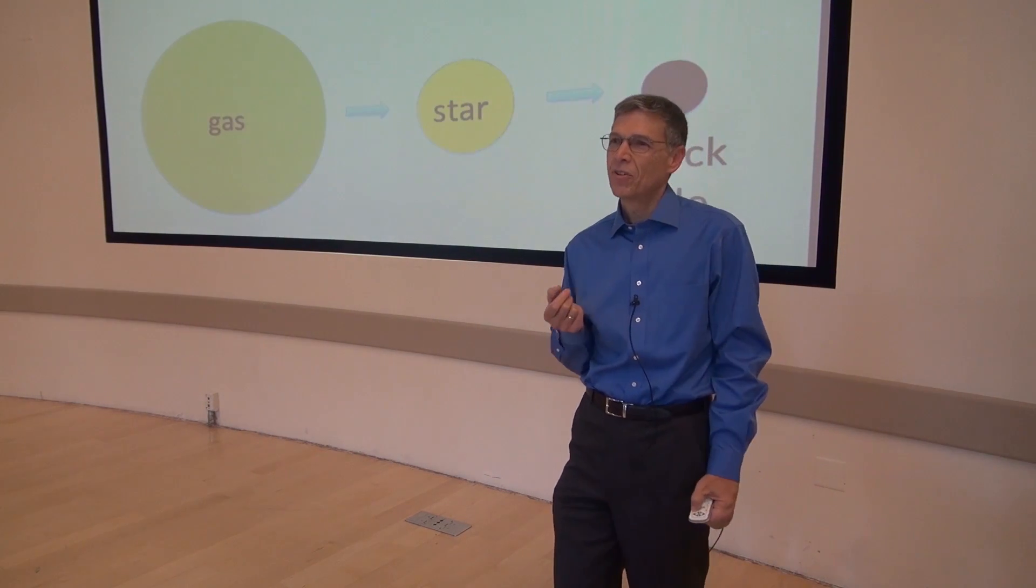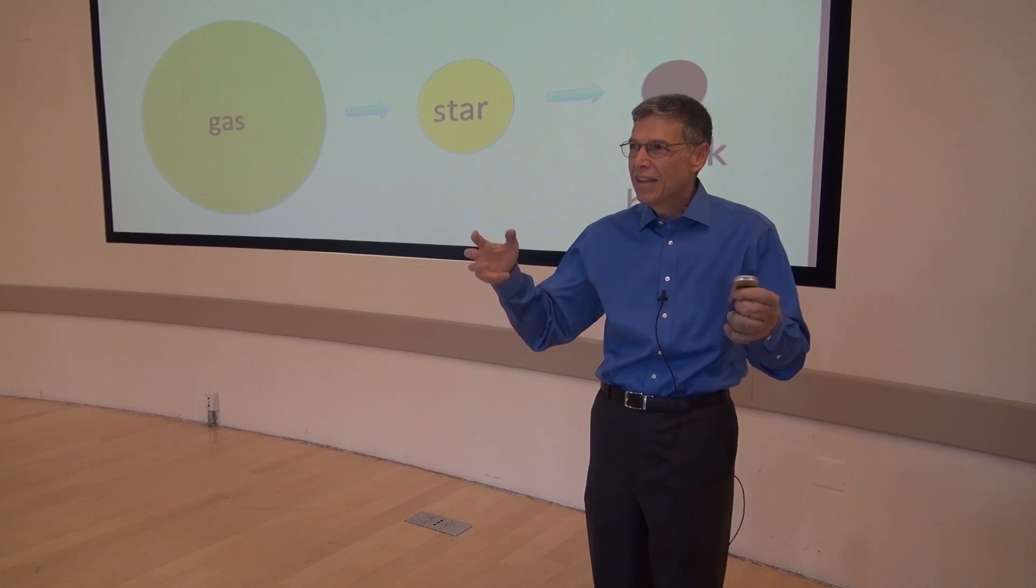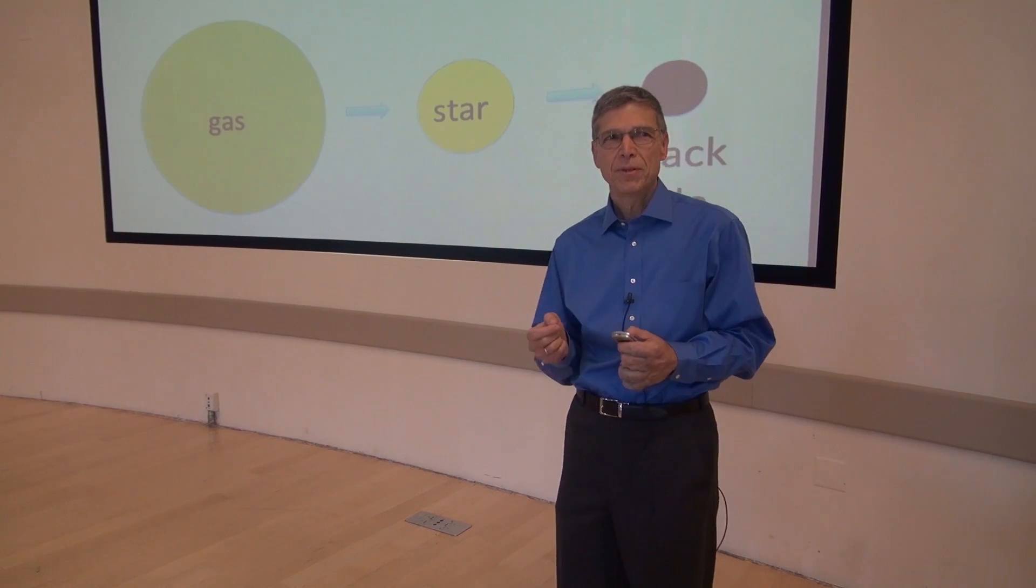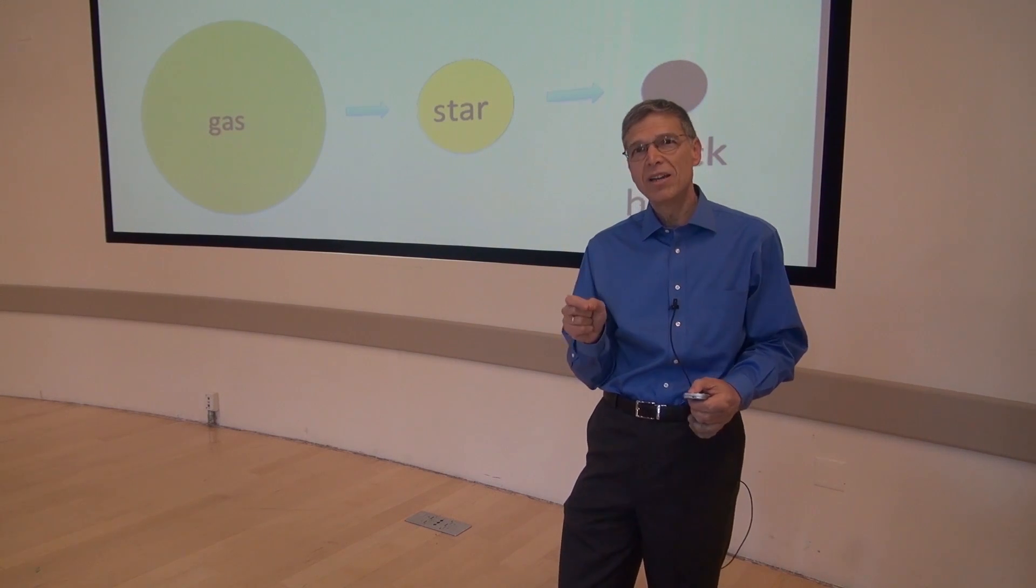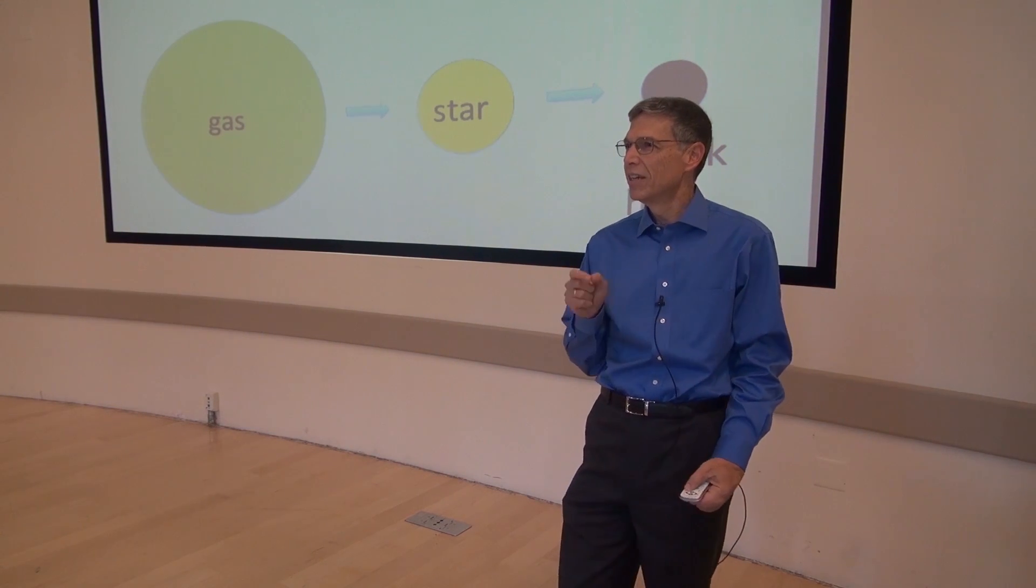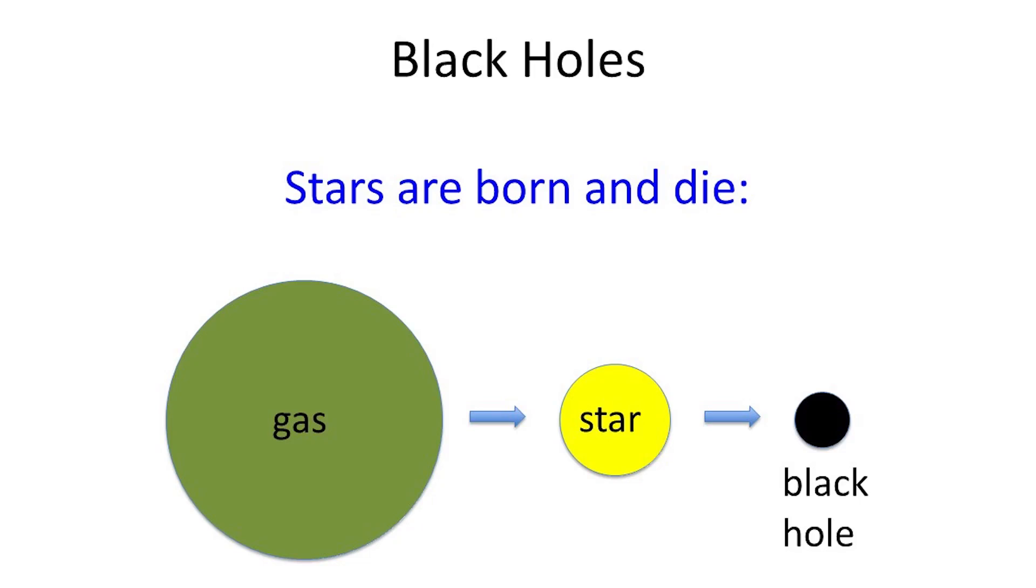Now, general relativity, of course, also predicts the existence of black holes. Like everything else, stars are born and die. They're born when a large cloud of gas starts to collapse under its gravitational attraction. And as it collapses, it starts to heat up. Eventually, the temperature in the center of that gas cloud becomes hot enough that nuclear reactions take place and hydrogen is turned into helium. That heats up the gas cloud even more. And you get a star, which is just a hot ball of gas, which supports itself against gravitational collapse by ordinary hot gas pressure.